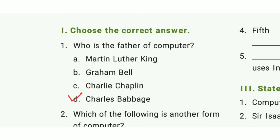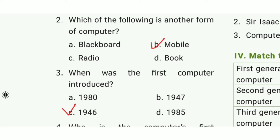First one: Who is the father of computer? The answer is option D, Charles Babbage. Second one: Which of the following is another form of computer? The answer is option B, Mobile.